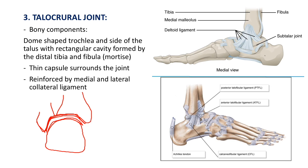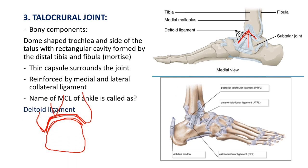The medial and lateral collateral ligaments reinforce and stabilize the talocrural joint. The medial collateral ligament, also called the deltoid ligament, has three slips connecting the calcaneum, navicular, and talus to the tibia. The lateral collateral ligament includes the posterior tibiofibular ligament, anterior tibiofibular ligament, and calcaneofibular ligament.